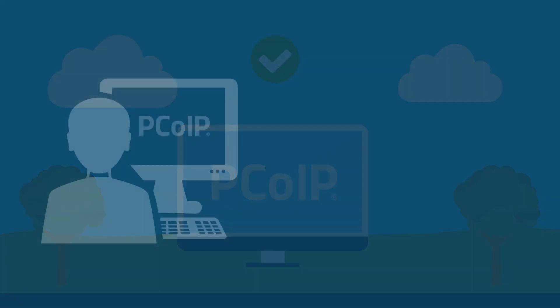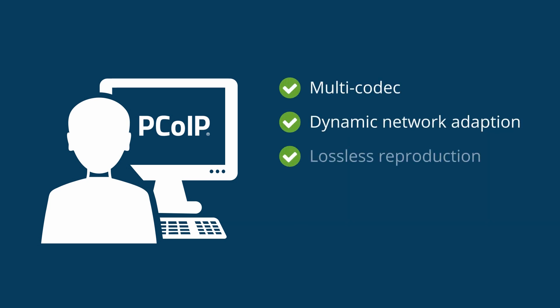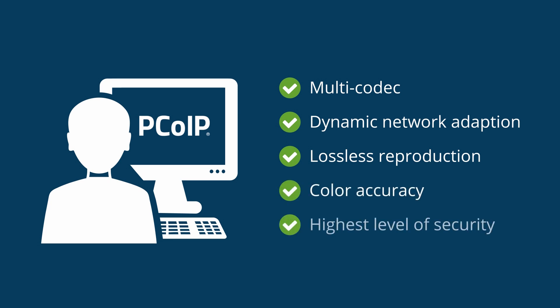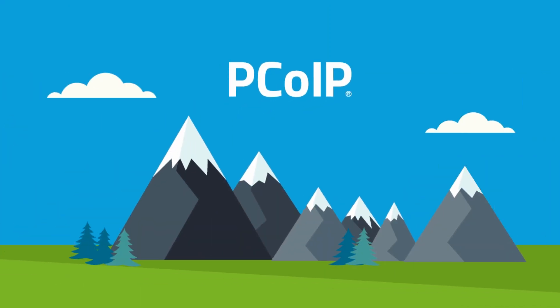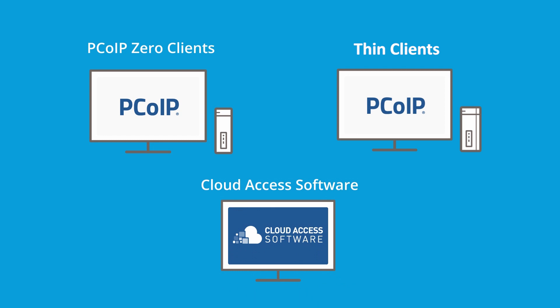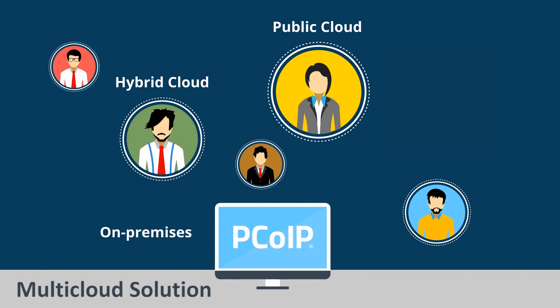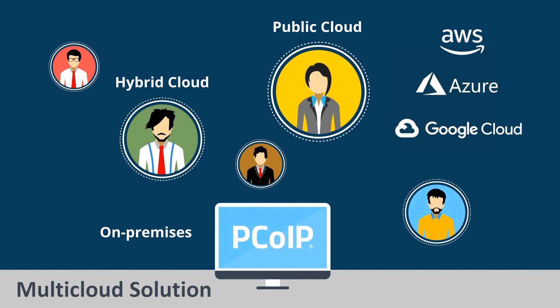The unique features and capabilities of PCoIP — multi-codec, dynamic network adaptation, lossless reproduction, color accuracy, and the highest level of security — form the basis for the PCoIP products, including PCoIP zero clients, thin clients, cloud access software, and more. PCoIP technology supports on-premises, hybrid, and leading public cloud environments. Have the freedom to choose with PCoIP.